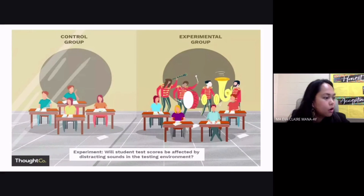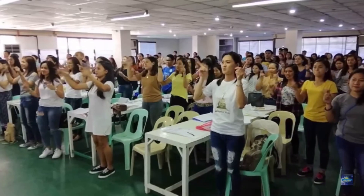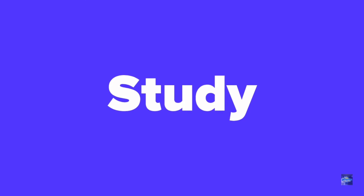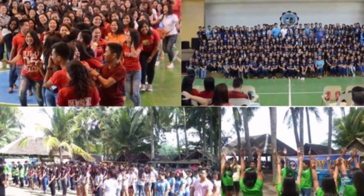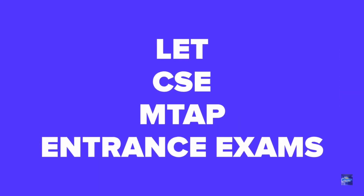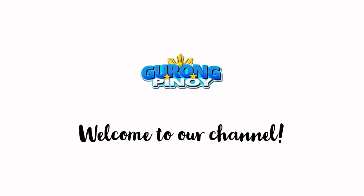So these are the two types of groups that we have whenever we have our experiment: the experimental group and the control group.